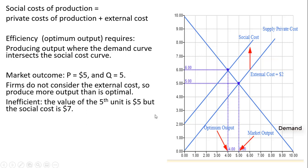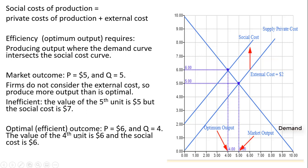So that is inefficient. The optimum, or efficient, output level occurs where the price is $6 and the quantity is 4 units. The value of the fourth unit, walking up to the demand curve, is $6. And the social cost of the fourth unit, walking up to the social cost curve, is also $6. That is where we want to stop producing.